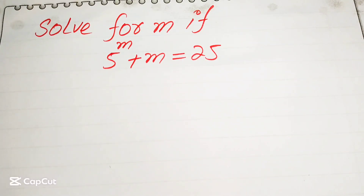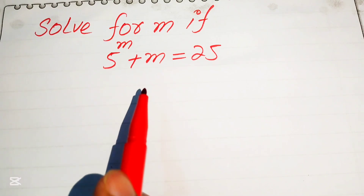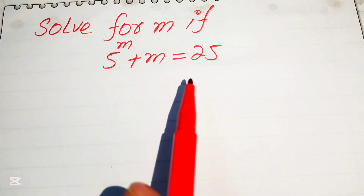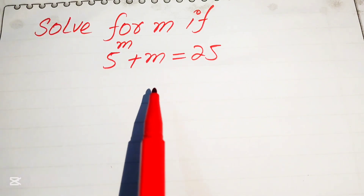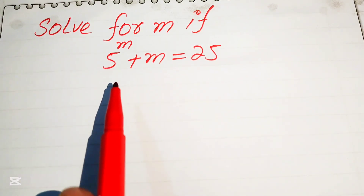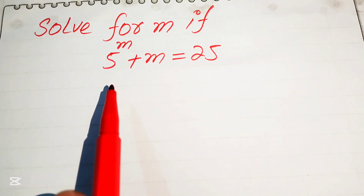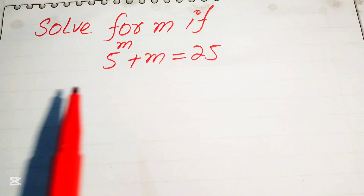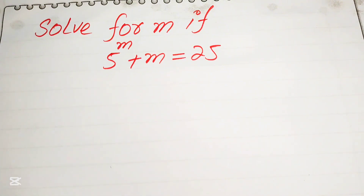Hello everyone, welcome to solve this nice math lumped exponential equation problem. Here we have 5 to the power of m plus m equals 25, and we solve this problem for the values of m.